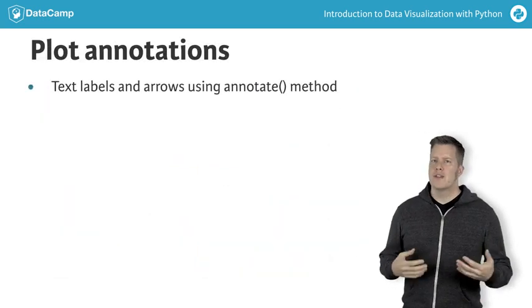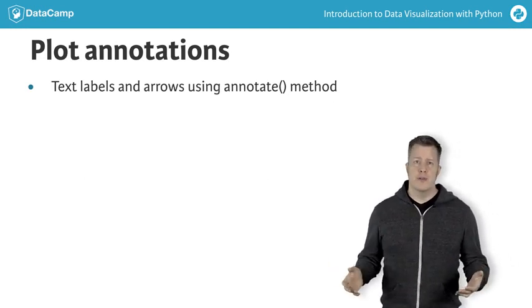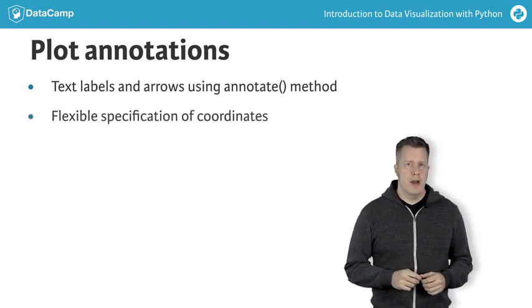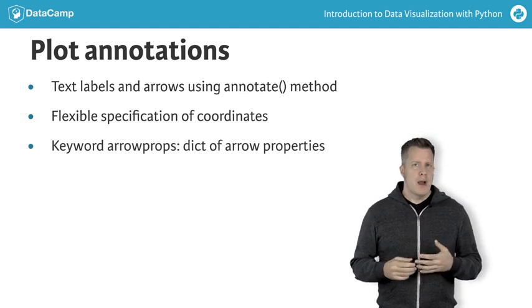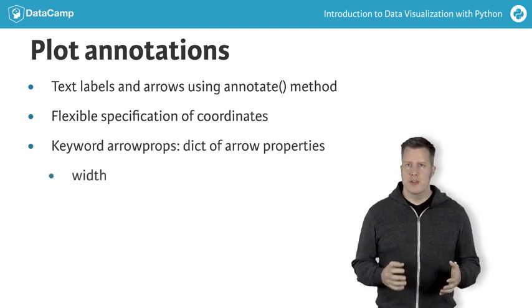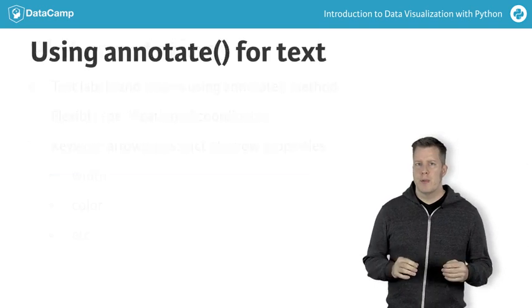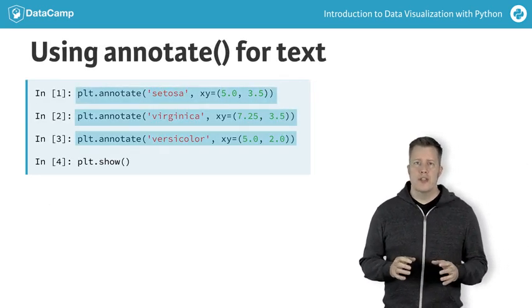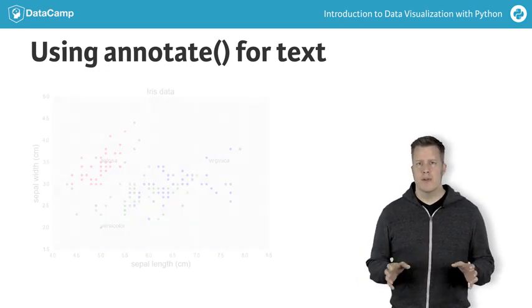The annotate function adds text to a figure. It can also draw arrows from the text to other features to highlight. There are flexible ways to specify coordinates in the API. There's also a keyword argument arrow props that uses a Python dictionary to customize the arrow that's drawn. Let's avoid the legends this time and place text labels on the plot directly with the annotate function. We'll place directly at locations given by the tuple xy in each invocation. This is the resulting figure.